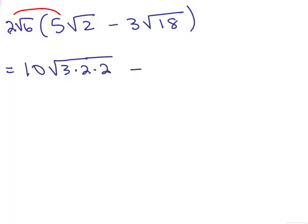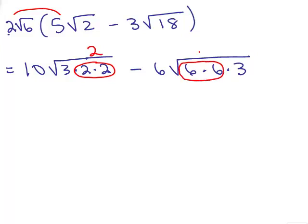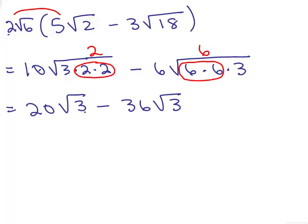For the second term, on the outside I've got 2 times 3, that's 6. For the inside I've got 6 times 18. I noticed that 6 goes into 18, so I can leave that as a 6 and write the 18 as 6 times 3. That makes it easy because I've written it as a perfect square — 6 times 6 — under the radical. From the two factors of 2, one pops out, and from the two factors of 6, the 6 pops out. So 10 times 2 is 20 with square root of 3 remaining, and 6 times 6 is 36 with square root of 3. We can combine these because they're both square roots of 3, so I do 20 minus 36, which is negative 16 square roots of 3.